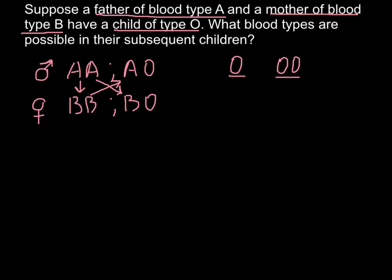And the only way when we can get a child whose phenotype would be O and genotype OO is when we cross AO with BO. So such a cross would give us a possibility for the child to be genotype OO.